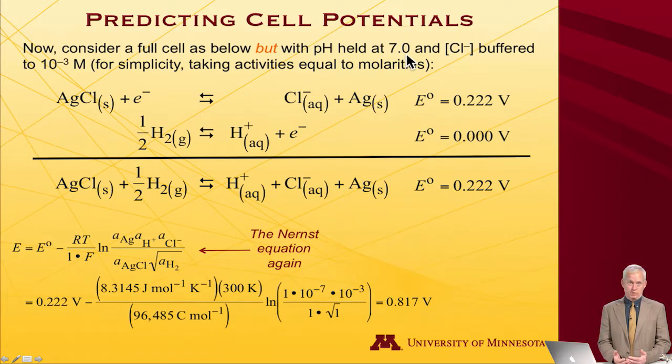pH 7 is 10 to the minus 7th molar. Unit activity would be 1 molar, which would correspond to a pH of 0. So there's a big difference between pH 0 and pH 7. And maybe we'll buffer the chloride anion at 10 to the minus third molar. Again, unit activity would imply 1 molar, so we've got substantially less proton concentration and chloride concentration on the right-hand side of our reaction. And the Nernst equation tells us how to predict what the full cell potential will be under those conditions.